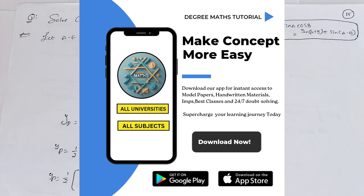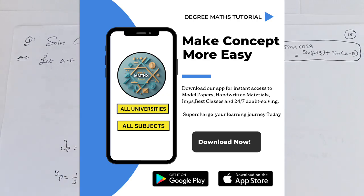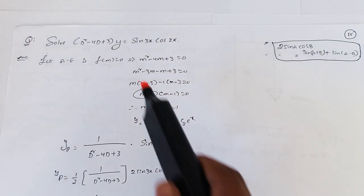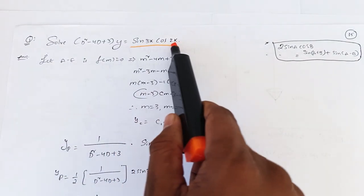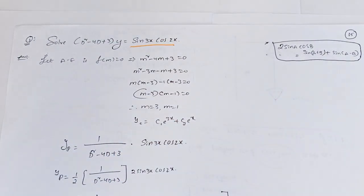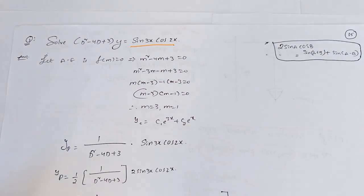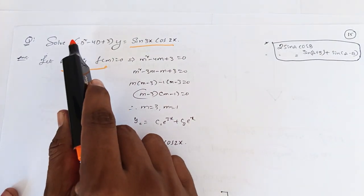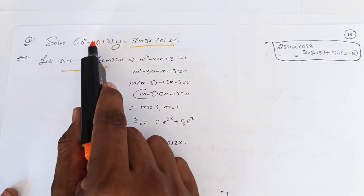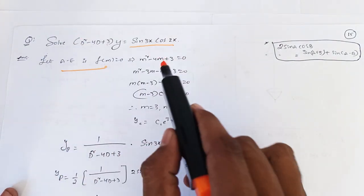This is where I start to turn the square — we will turn the square. The problem is sin 3x cos 2x. First, we get the auxiliary equation: m squared minus 4m plus 3.